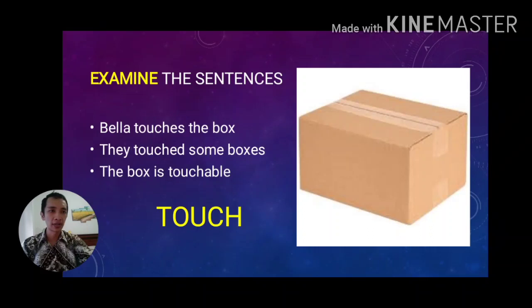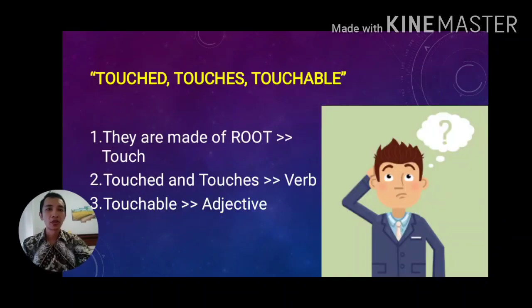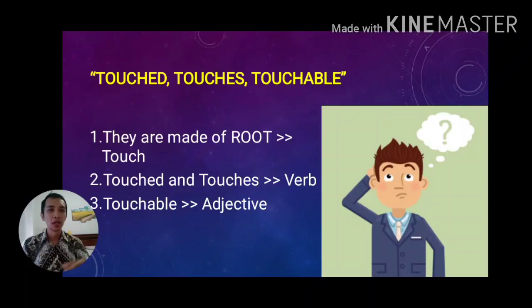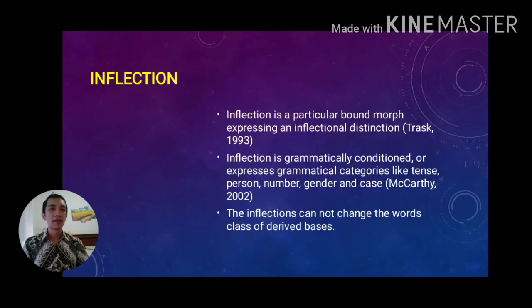We also have another repeated word, the noun 'box.' Considering 'touched,' 'touches,' and 'touchable,' we can know they come from the same root word 'touch' as a verb. 'Touch' and 'touches' still keep the same class of word — verb — but 'touchable' is no longer a verb; it changes into an adjective. So there are two processes here: one where the word keeps its class, and one where the word changes its class.